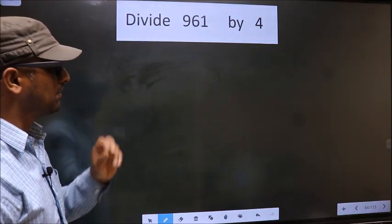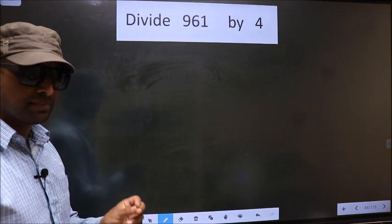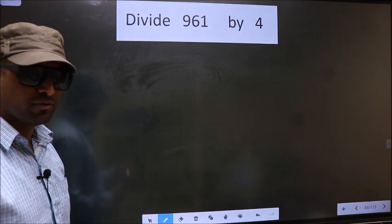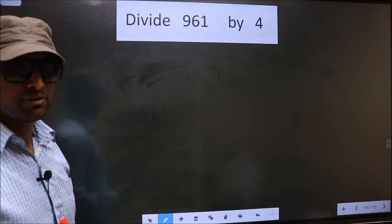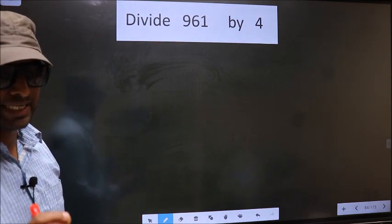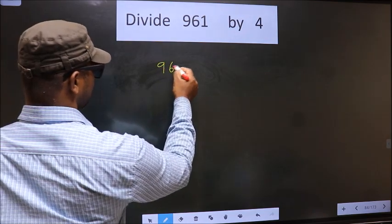Divide 961 by 4. While doing this division, many do this mistake. What is the mistake that they do? I will let you know, but before that we should frame it in this way: 961 divided by 4.